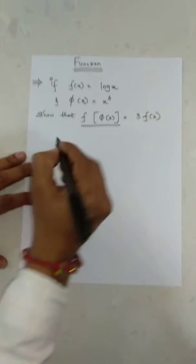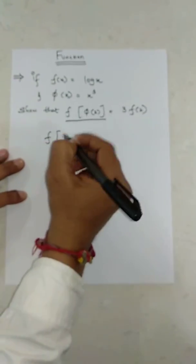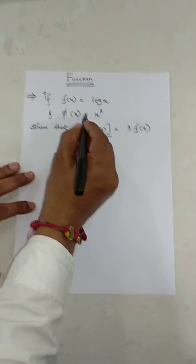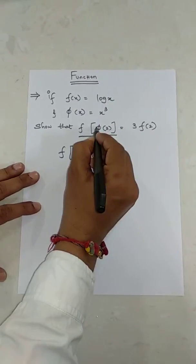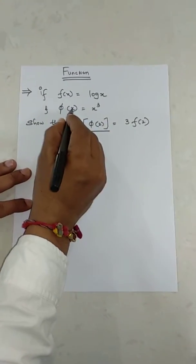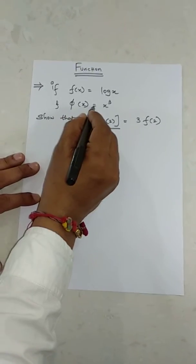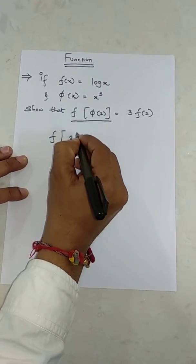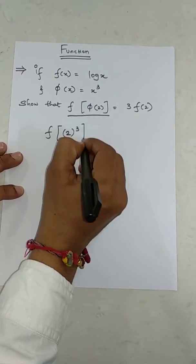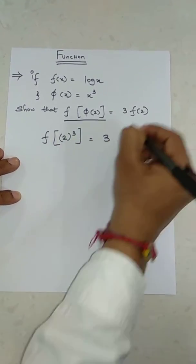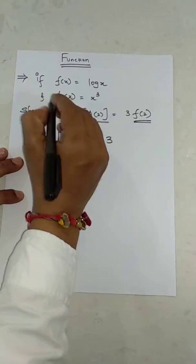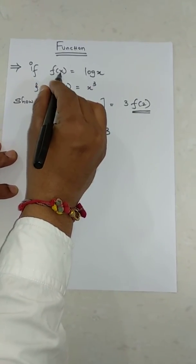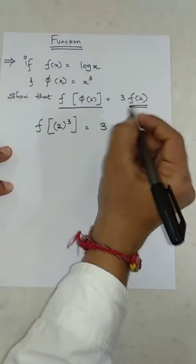φ(x) = x³, so φ(2) — instead of x, substitute 2 — equals 2³ = 8. This equals 3f(2). Since f(x) = log x, f(2) = log 2.